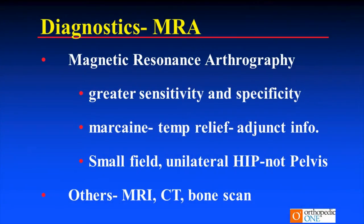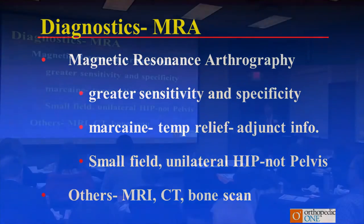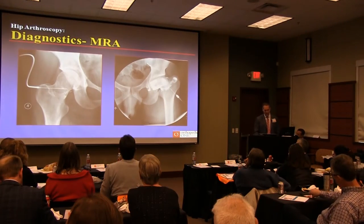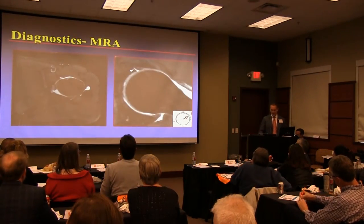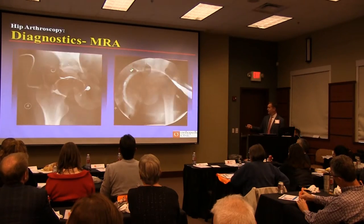MR arthrography has greater sensitivity, as Dr. Reeder mentioned. Important: small field of view, unilateral, focused on the hip — not the pelvis. Outside MRIs are sometimes sent for hip pain and they have a pelvic MRI — that's essentially worthless if we're looking for labral tears. Small field focused on the unilateral hip, not a pelvis MRI. MR arthrogram is the study of choice.